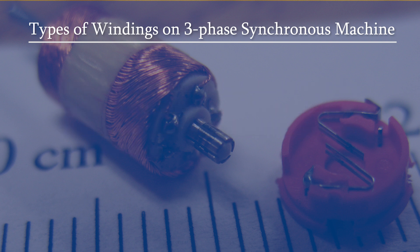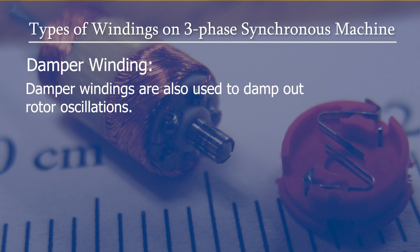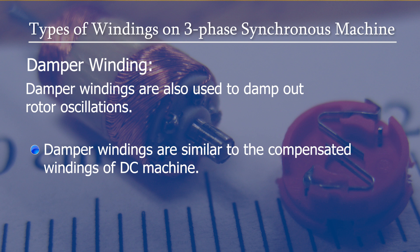Another type of winding is the damper winding. Damper windings are used to damp out rotor oscillations to give stable operation, and are similar to the compensating windings of DC machines.